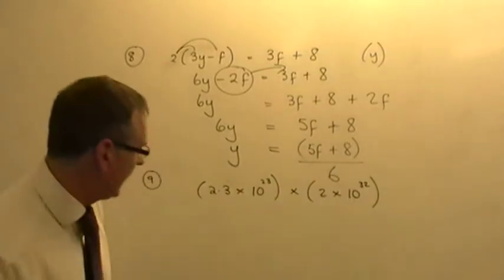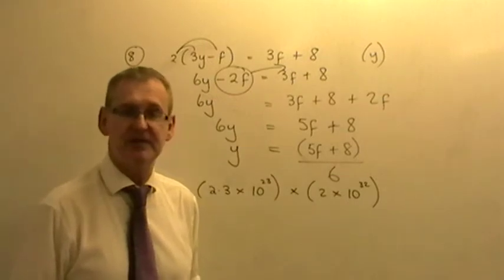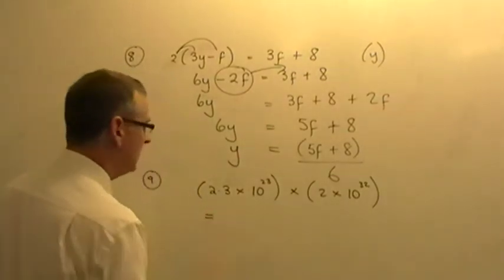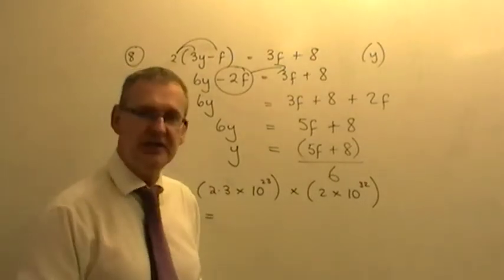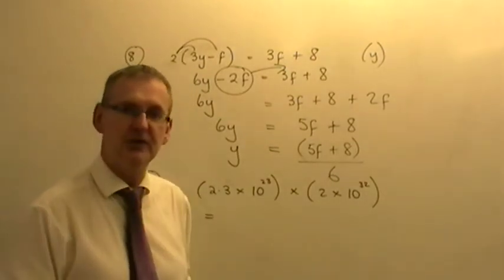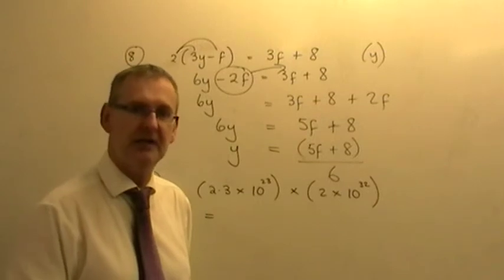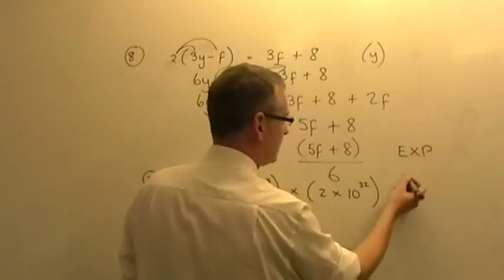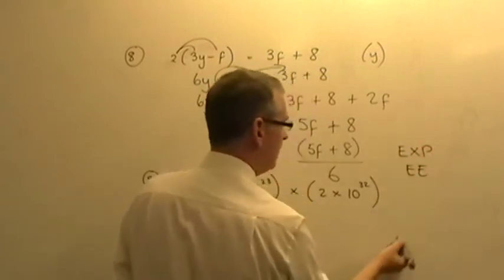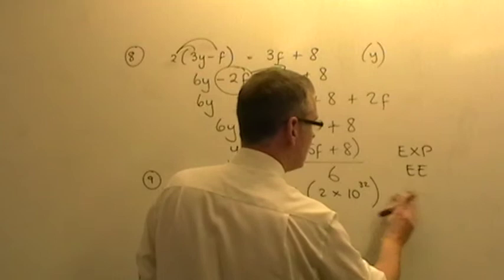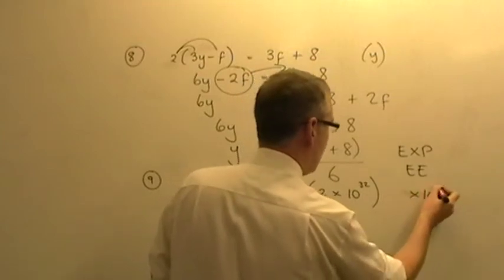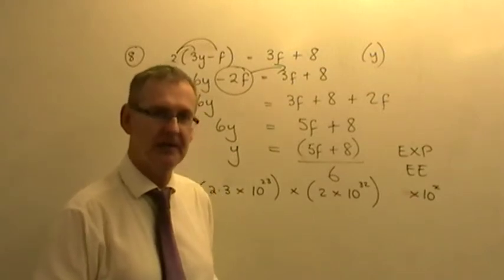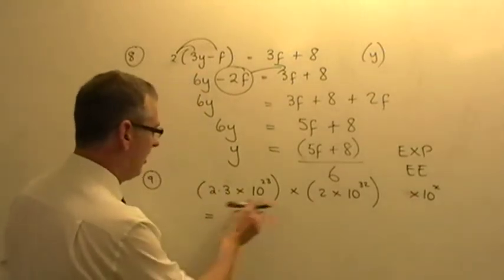This is designed for paper 2, because it's a paper 2 test. So you would be allowed to use a calculator. So if you were using a calculator with this, you need to use your EXP button, which is your standard form button. Some calculators have their own version of the standard form button. It's EXP. Some calculators, it's the EE button. Other calculators, you will have times 10 to the power X button. Whichever one it is for you, you need to know what that button is on your calculator.